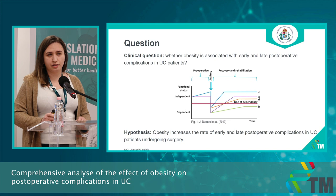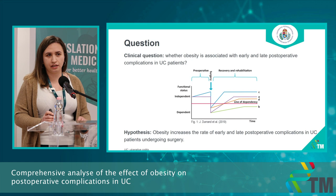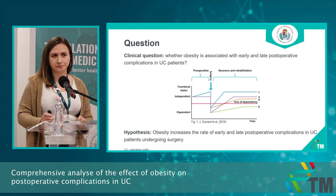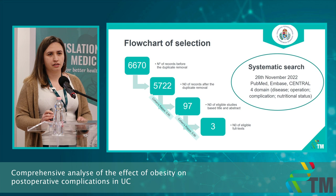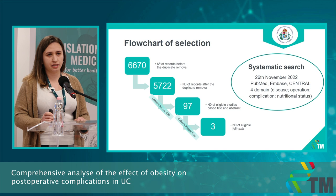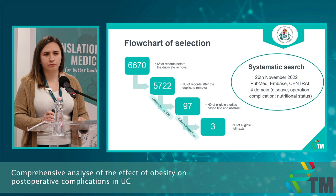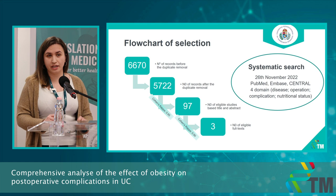On this figure you can see the importance of rehabilitation with the blue and orange lines, and the effect of complications with the orange and green lines. On this flowchart you can see that we started our selection with more than 6,000 hits using a search key with four domains. One was about the disease, one reflects the operation, one was about the complication, and one focuses on the nutritional status.